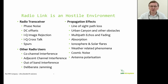The radio link is a hostile environment, and there are many things that can affect the performance of a radio. There are effects internal to the radio receiver, such as phase noise, DC offset, image rejection, cross-talk and spurs. There's also the effect of other radio users producing co-channel interference, adjacent channel interference, out-of-band interference, and downright deliberate jamming.